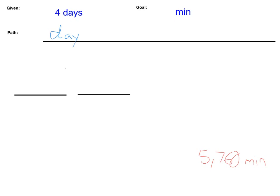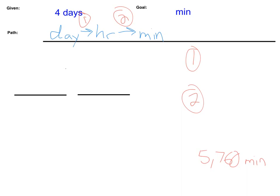I don't know how many minutes are in a day, but what I do know how to do is convert from days into hours, and then from hours into minutes. So in this case we have two conversions, so I need to write two conversions. I know that one day is equal to 24 hours, and I also know that one hour is equal to 60 minutes.